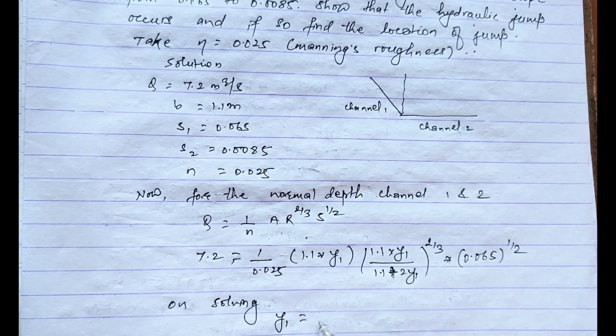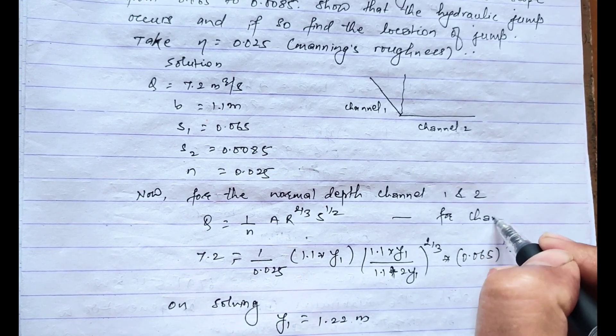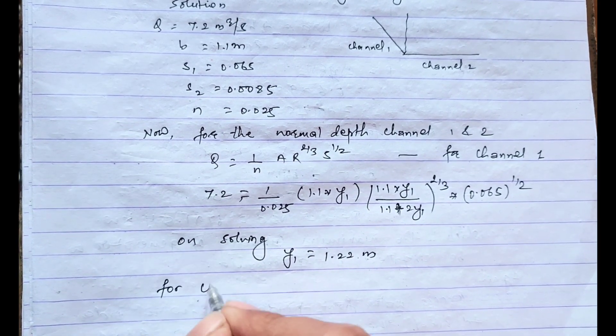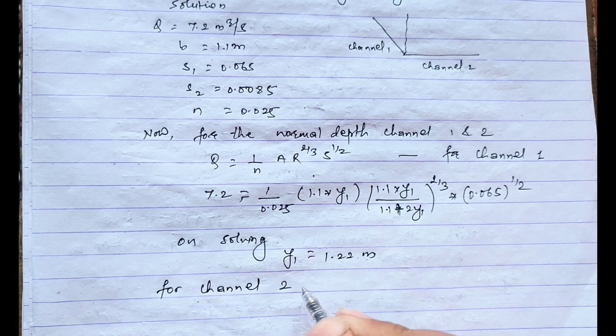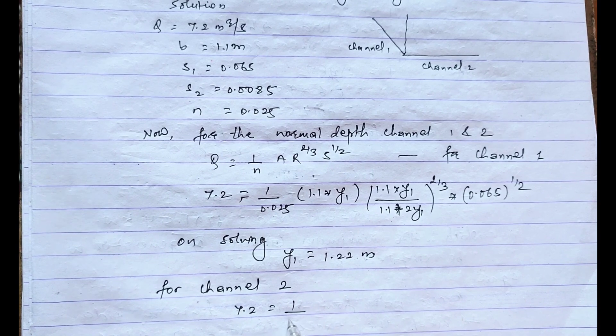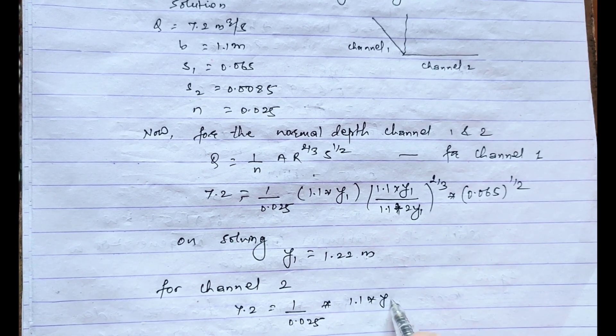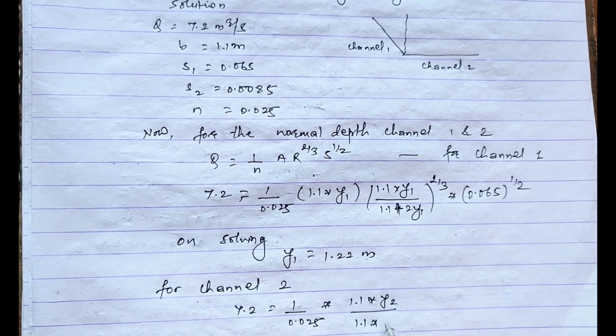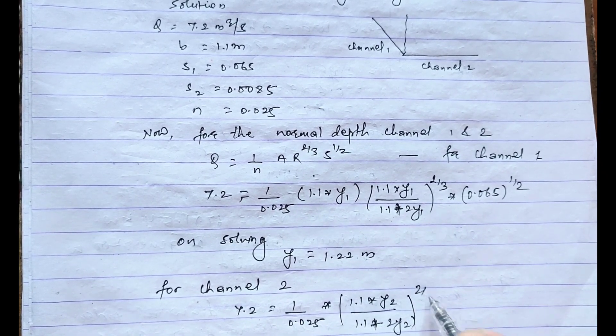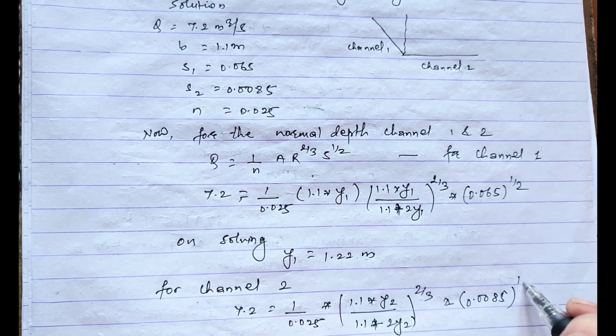The value of y1 equals 1.22 meter. This one is for channel 1. And similarly for channel 2, y2 will be 7.2 equals 1 by 0.025 times 1.1 into y2 divided by 1.1 plus 2y2 power 2 by 3, and times S2 is 0.0085 power 1 by 2.